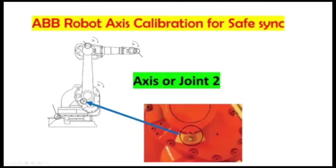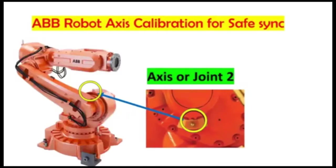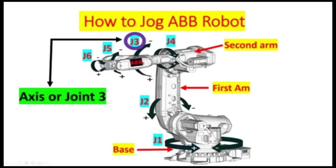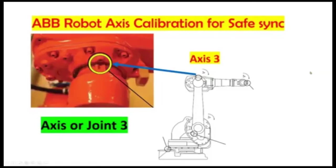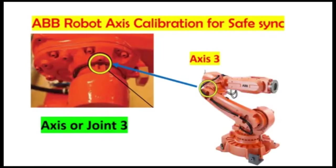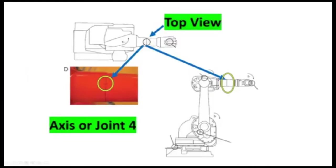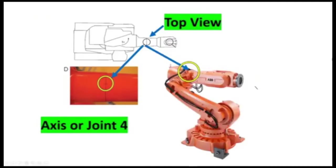This is the location of axis 2, and this is the actual location of axis 2 on the robot. This is axis 3 and this is the actual location shown on the mechanical drawing. And this is the actual location of axis 4 on the robot.